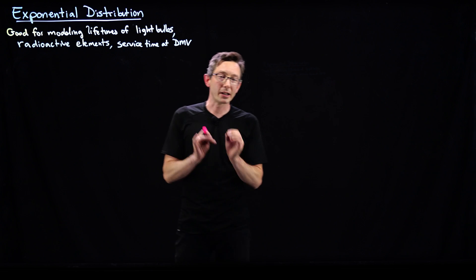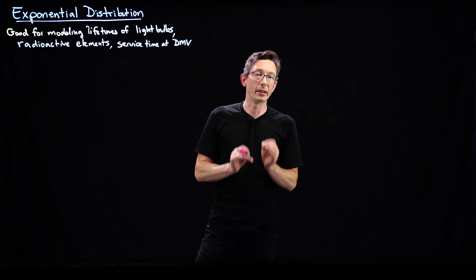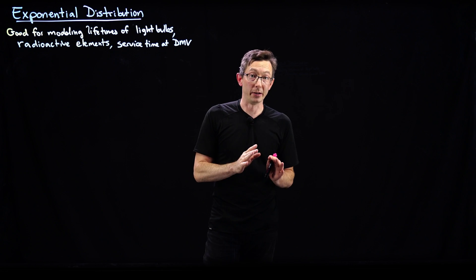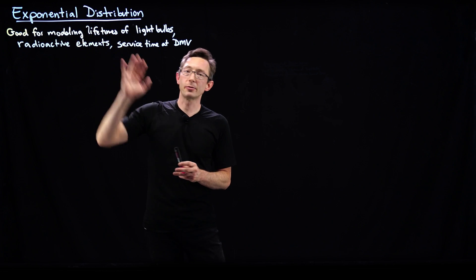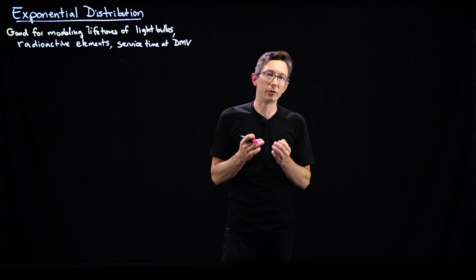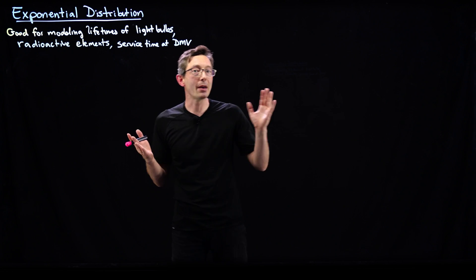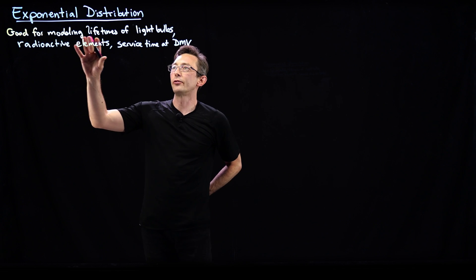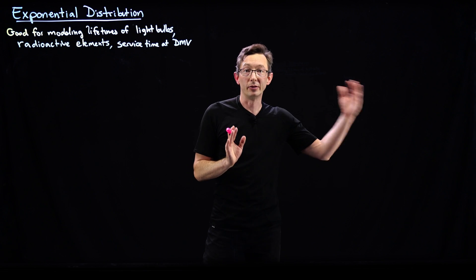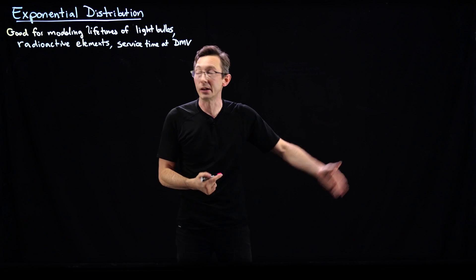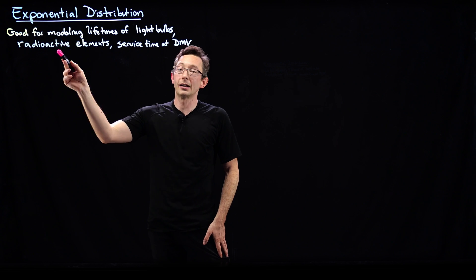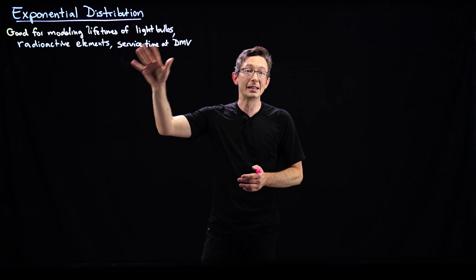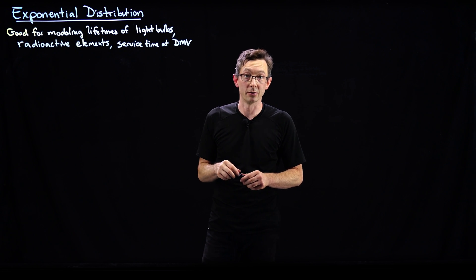Welcome back. Today I'm going to tell you about one of my favorite probability distributions, the exponentially distributed random variable. Exponential distributions are really useful for modeling the time at which some rare event is likely to happen. It's good for modeling the lifetimes of light bulbs, when a failure might happen, or when a radioactive element might decay, or when I might get seen by a human at the Department of Motor Vehicles.